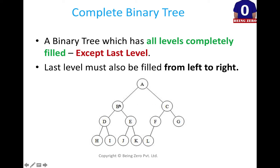Same way, B can have two children and both of them are there. C can have two children and both of them are there. D can have two children, E can have two children. F can also have two children, but F's left child is there and the right child is not there.